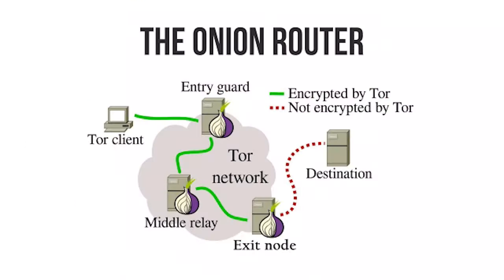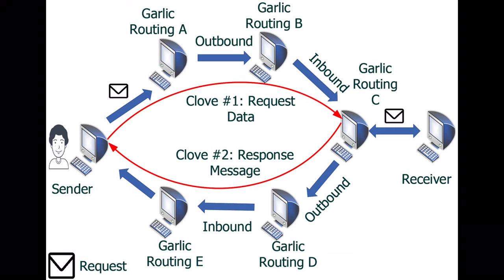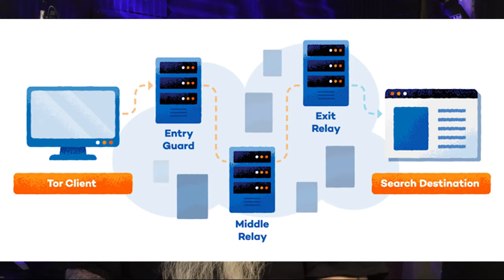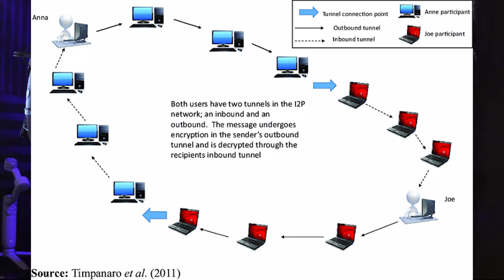Routing. This is a big one. With Tor, you have what they call onion routing, and with I2P, you have what they call garlic routing. What's the difference? Tor uses a centralized routing model where a user's data is passed through a series of volunteer-run nodes before reaching its destination. I2P, on the other hand, uses a decentralized peer-to-peer routing model, which basically means there's no central point of control or of failure in the network. Which is pretty awesome.